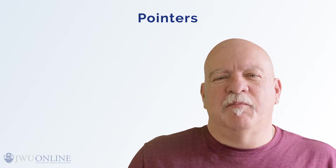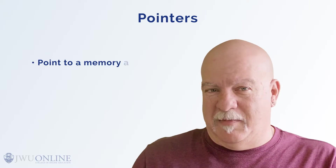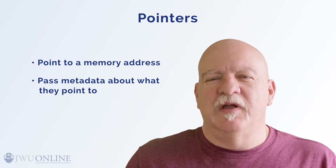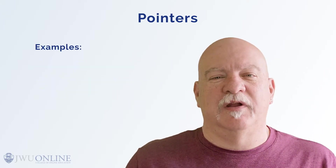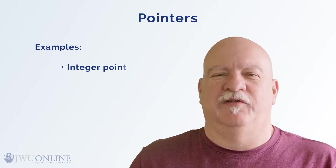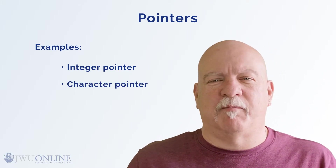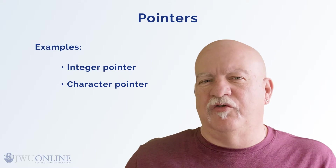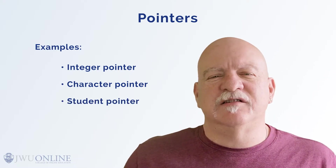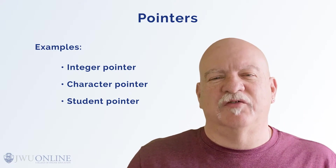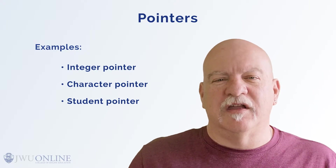Now let's examine the mechanics of getting this done. Pointers in C are used not only to point to the memory address, but also to pass on metadata about the thing they point to. So if you have a memory location that is connected to an integer, you need an integer pointer. If the pointer points to a character, you need a character pointer. If the pointer points to a student type, then we need to use a student pointer. The reason for this is that the size of the memory needs to be associated with the pointer so that the system knows how much memory to consider when looking for data.